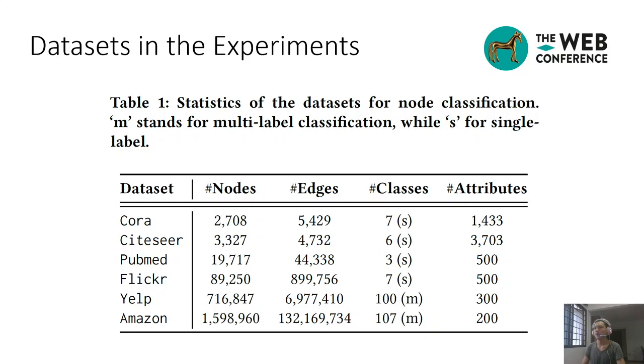In Flickr, each node represents one image, and an edge is built between two images if they share some common properties, for example, same geographic location, or the same gallery. Each of them contains an unweighted adjacency matrix. The statistics of these datasets are summarized in this table.